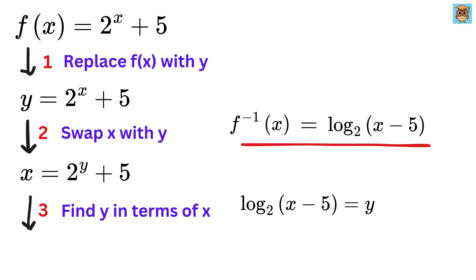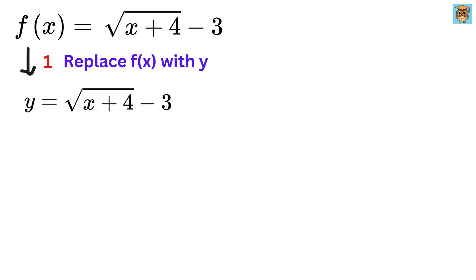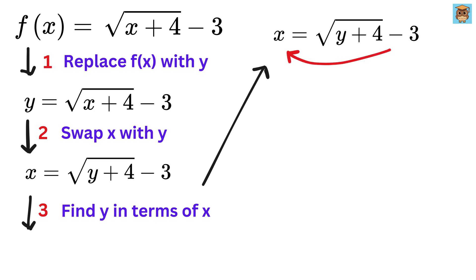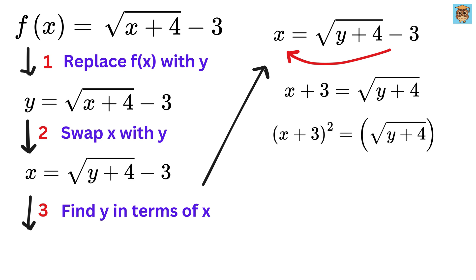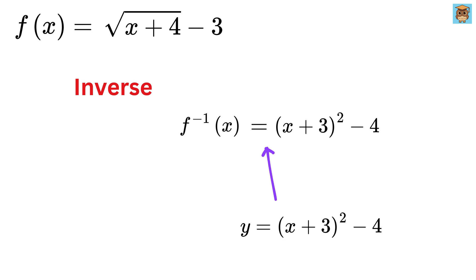That was super easy! We will solve two more examples to get a good grasp on this topic. Let f of x equal the square root of x plus 4, minus 3. Replace f of x with y, so y equals the square root of x plus 4, minus 3. Swap x and y. Find y in terms of x: take minus 3 to the left-hand side to get x plus 3. To remove the square root, square both sides to get x plus 3 whole squared equals y plus 4. Take 4 to the other side to get y equals x plus 3 whole squared minus 4. This is the inverse of f of x.